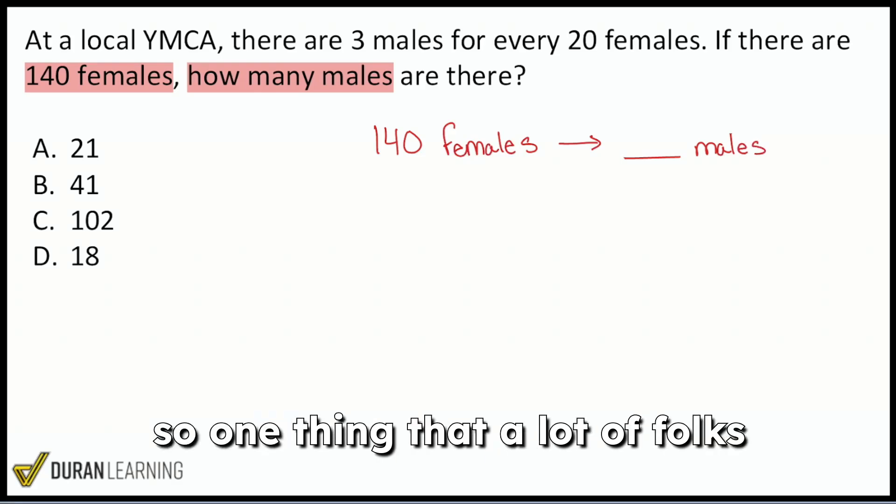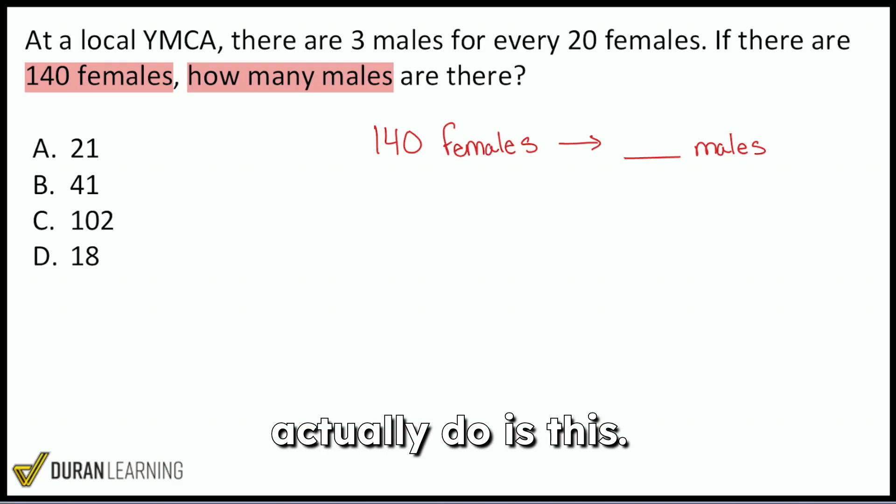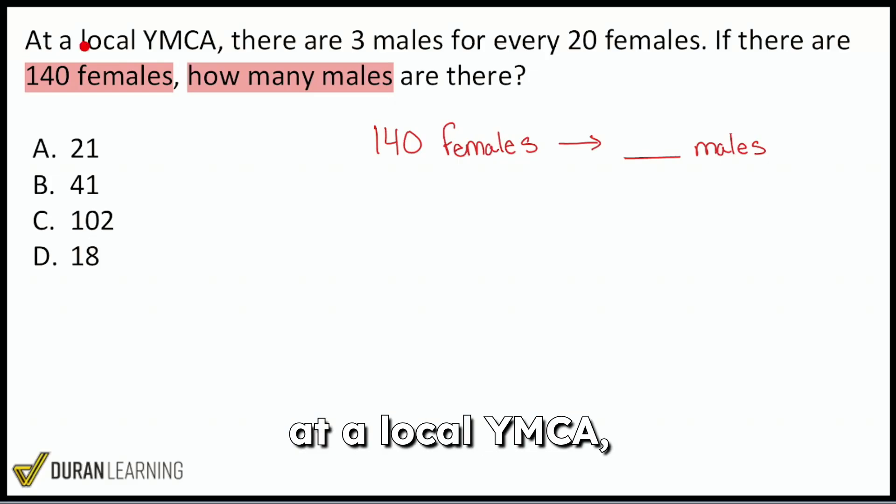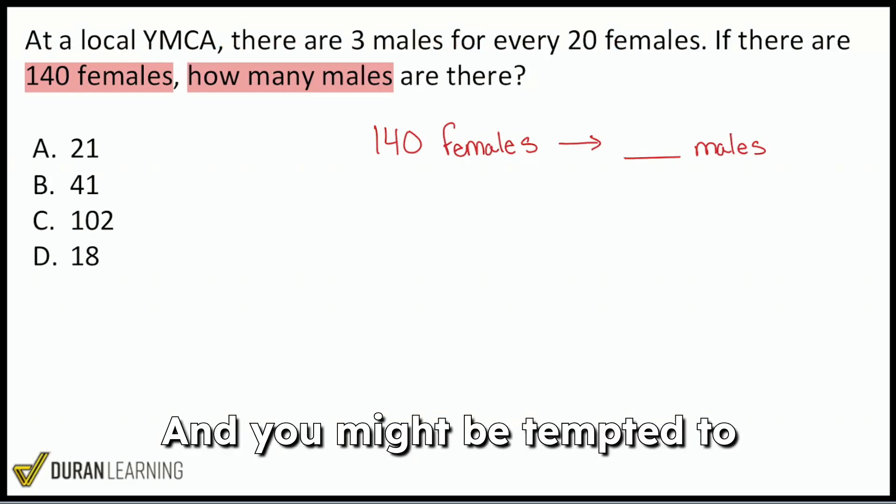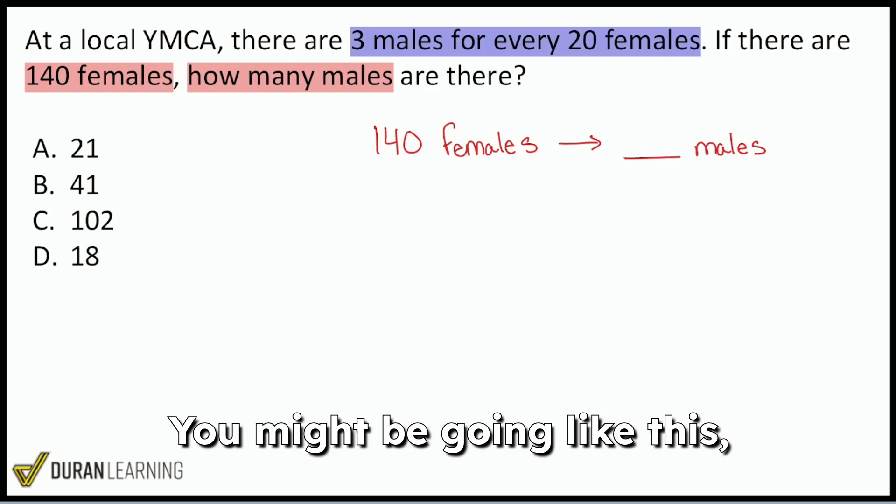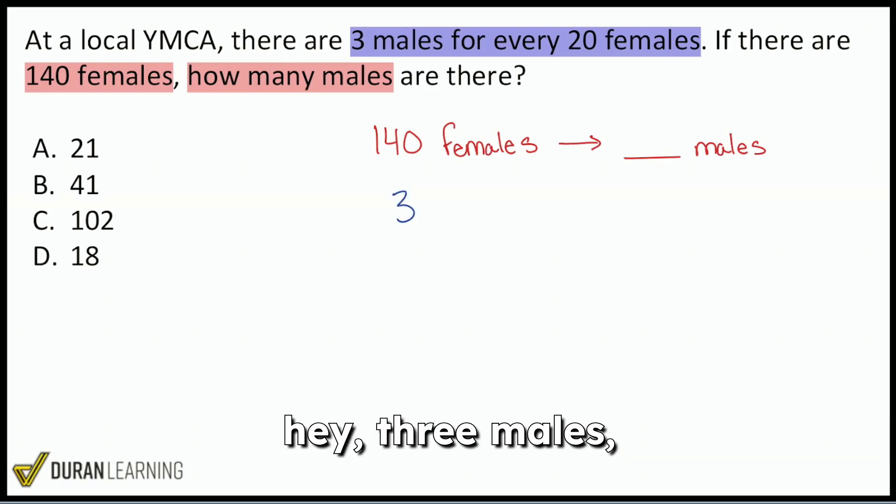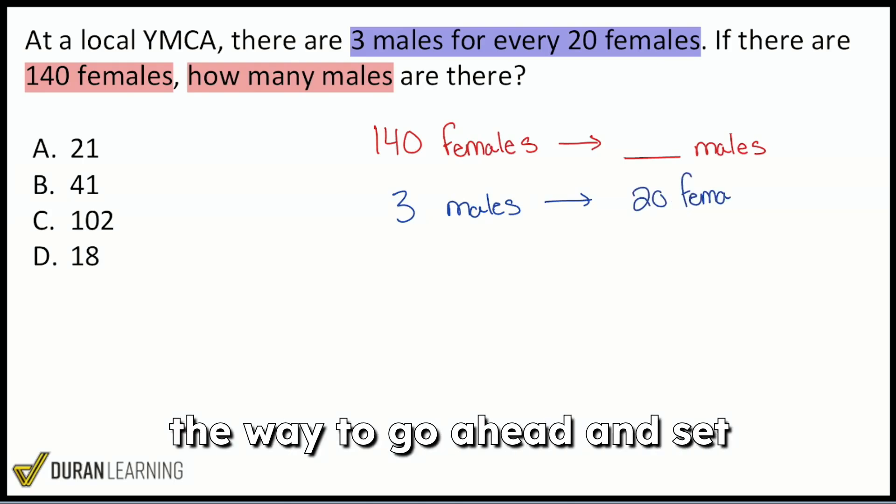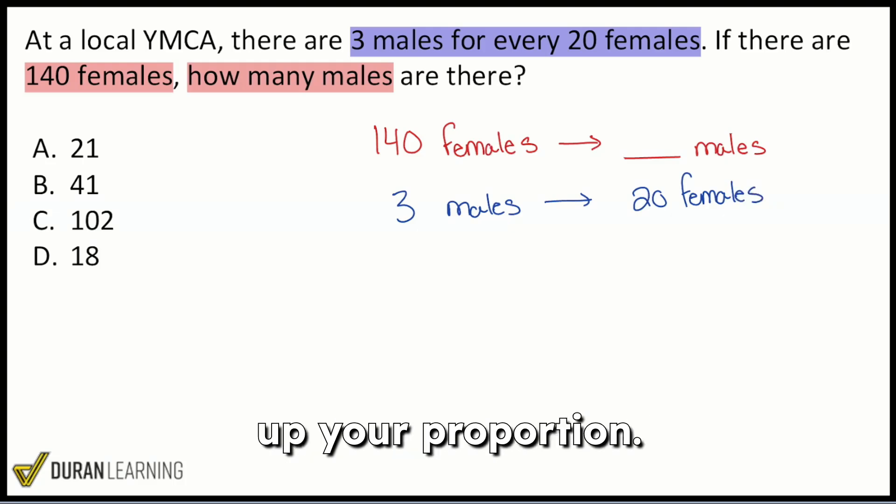So one thing that a lot of folks with test anxiety might actually do is this. They might go ahead and read this and say, okay, at a local YMCA, there are three males for every 20 females. And you might be tempted to immediately write it like this, exactly how you see it. You might be going like this, hey, three males, then arrow 20 females. And you think that that might be the way to go ahead and set up your proportion.